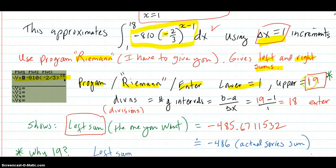The lower boundary is 1. The upper boundary is 19, not 18. I'm going to show you why that is. The divisions, the number of intervals is what that really means, is that formula b minus a over delta x, which is 19 minus 1 over 1, which is 18. So we want 18 steps and we enter and you get this number here.